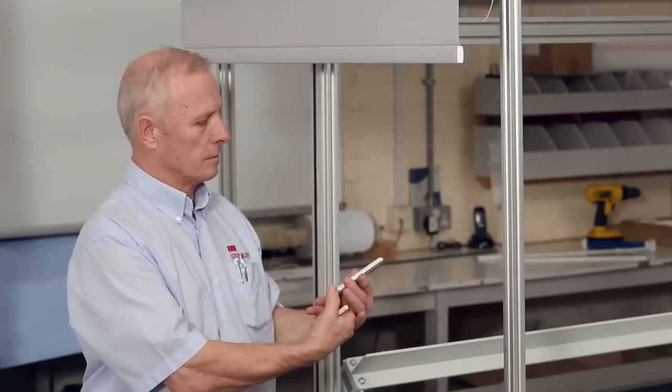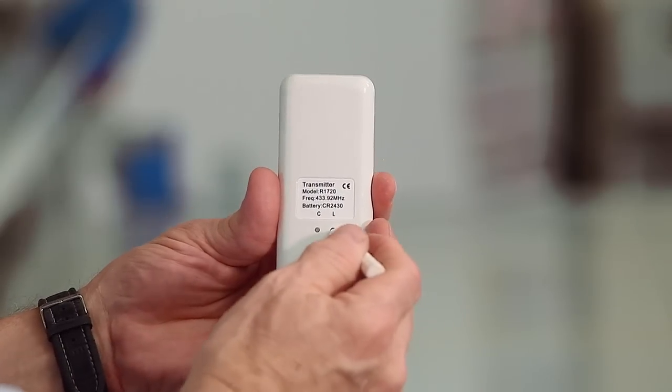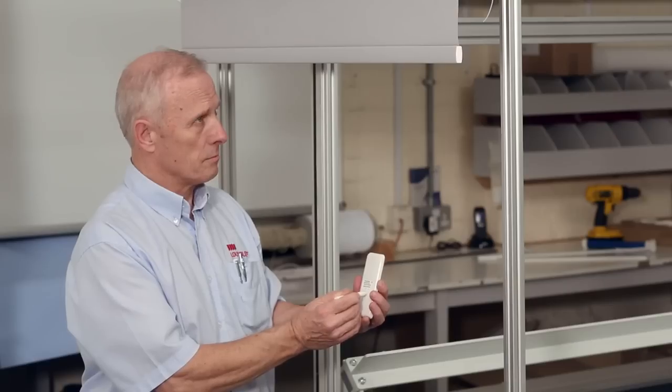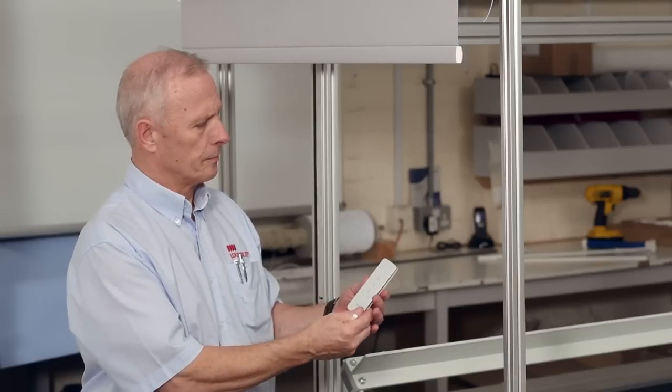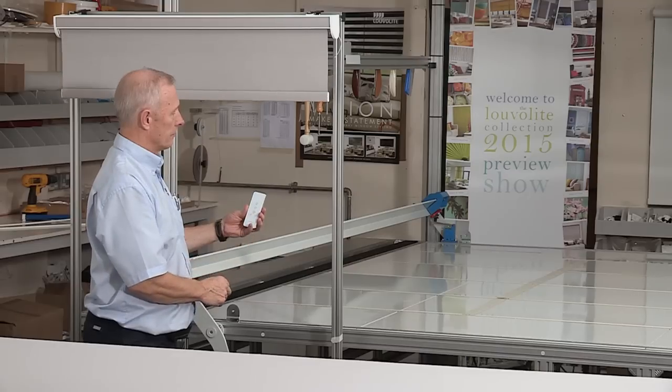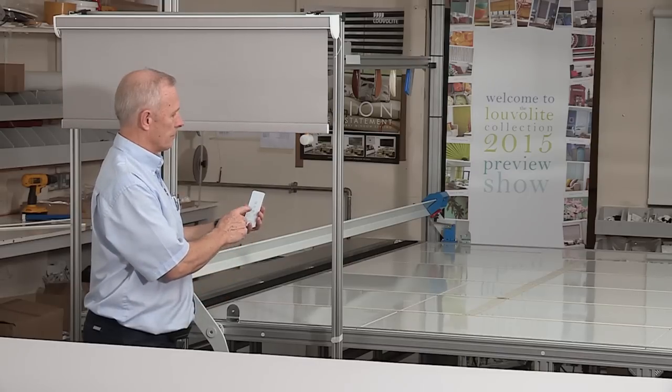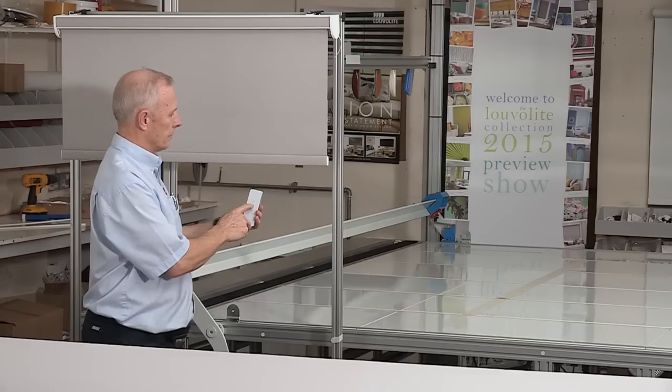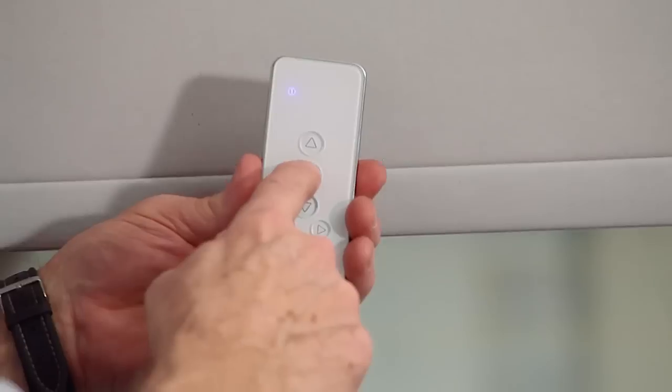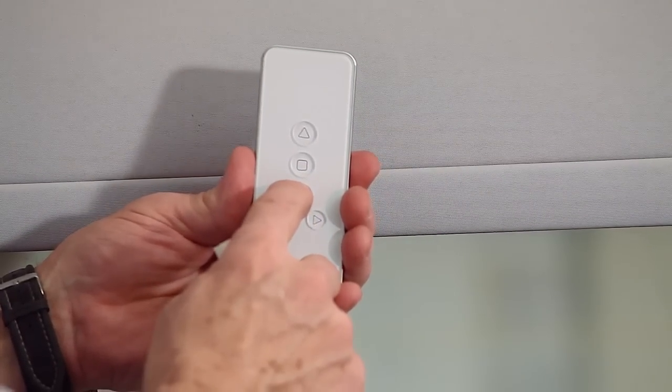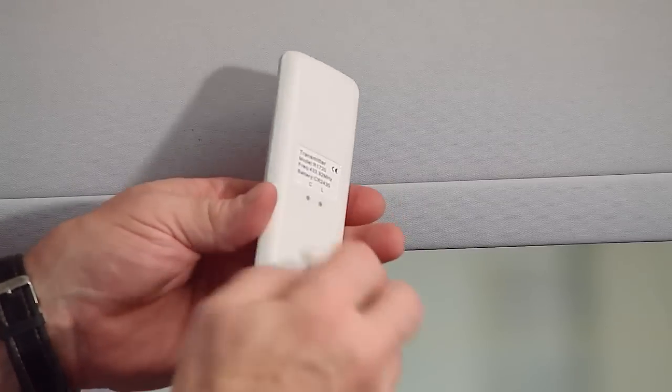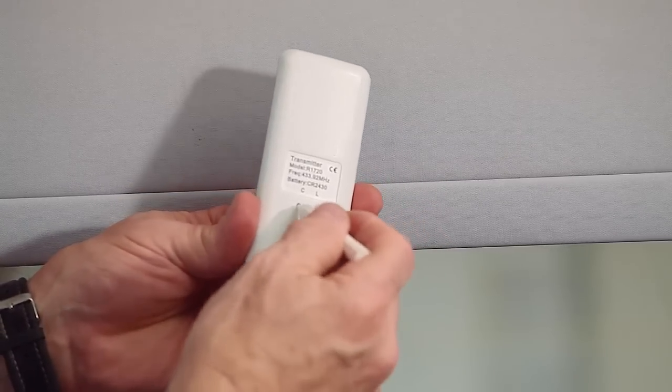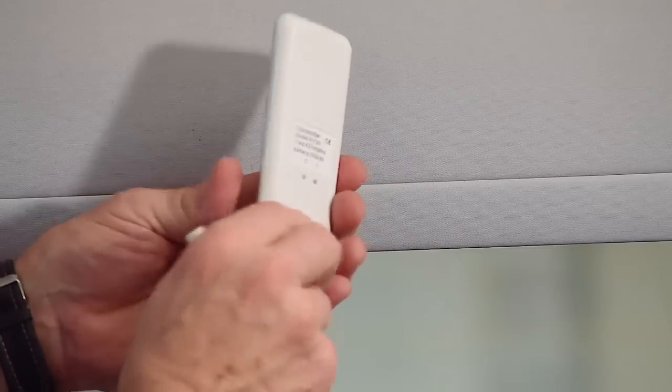To set the lower limit, press and hold the limit button on the remote until the motor jogs twice. Release the button and now the motor is ready to set limits. Press the down button on the remote and when the motor gets close to the required lower limit, press the stop button. Press the down button to set the lower limit accurately. Press the confirm button on the remote. When the motor jogs twice, the setting has been completed.